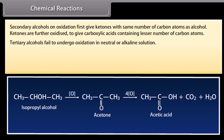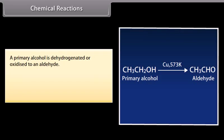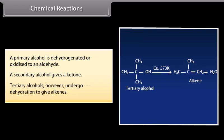Tertiary alcohols fail to undergo oxidation in neutral or alkaline solution. Action of hot reduced copper: when vapors of primary, secondary or tertiary alcohols are passed over hot reduced copper at 573 K, different products are obtained. A primary alcohol is dehydrogenated to an aldehyde; a secondary alcohol gives a ketone; tertiary alcohols, however, undergo dehydration to give alkenes.